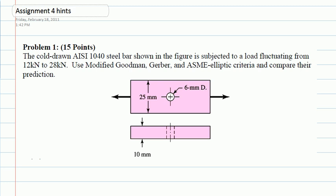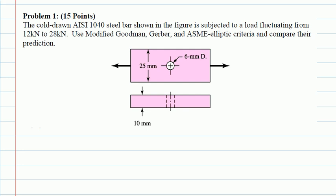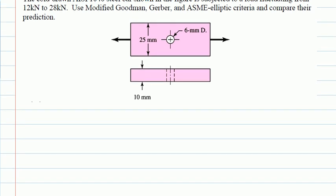The first question is a simple one. You have a bar with a hole in it, and there are axial forces applied to the bar. The load fluctuates from 12 kilo-Newton to 28 kilo-Newton, and we want to use modified Goodman, Gerber, and ASME elliptic criteria and compare the failure predictions. First, you need to find out the material — AISI 1040 steel.